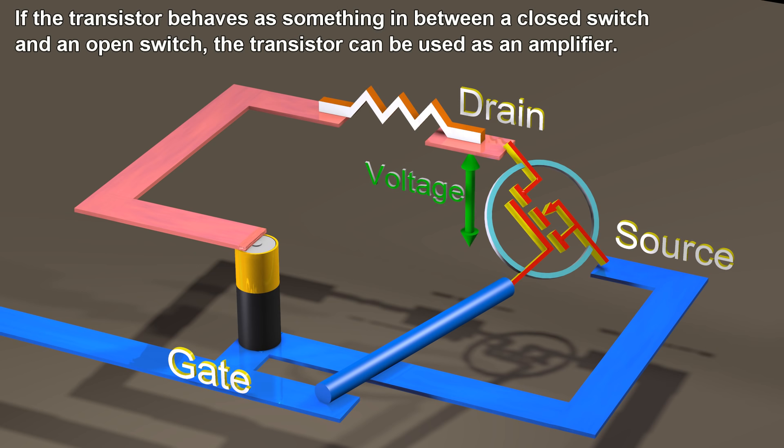If the transistor behaves as something in between a closed switch and an open switch, the transistor can be used as an amplifier.